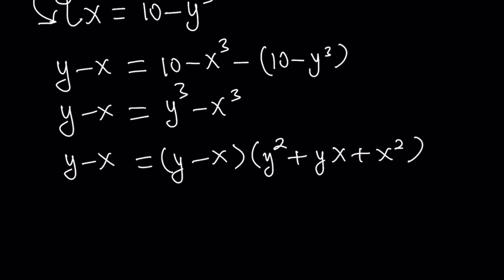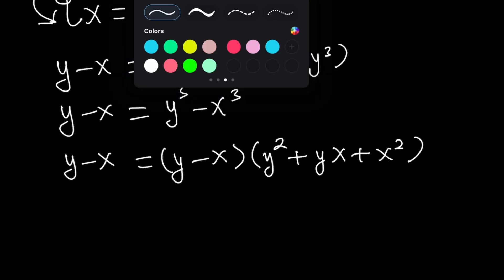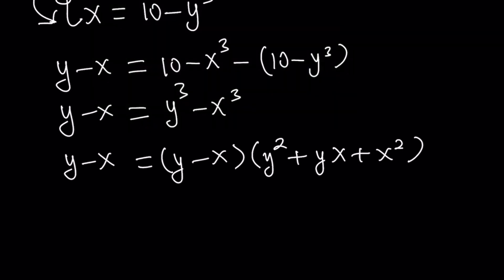Now, we can go ahead and cancel out the y minus x, but that's not going to be good. You don't want to do that if you're solving an equation and you have variable terms on both sides. Even though they're the same, you do not want to simplify them. You don't want to cancel out. Why? Because you will lose some of the valid solutions. In this case, we're talking about y minus x.